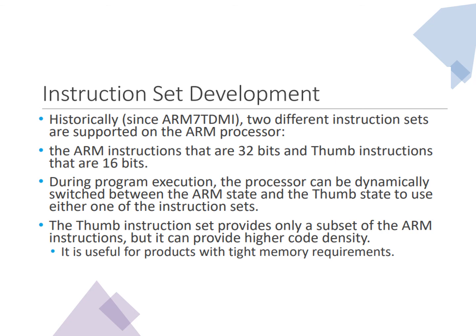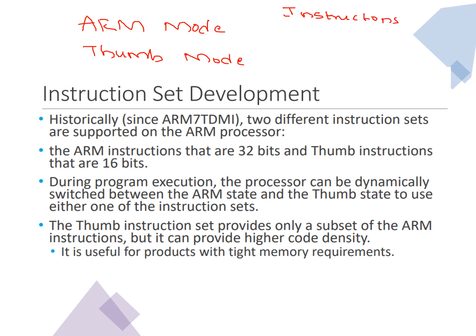Historically, since the ARM7TDMI, two different instruction sets have been supported on ARM processors. One is referred to as ARM mode, and the other as Thumb mode. In ARM mode, all instructions are 32-bit instructions. In Thumb mode, all instructions are 16-bit instructions.